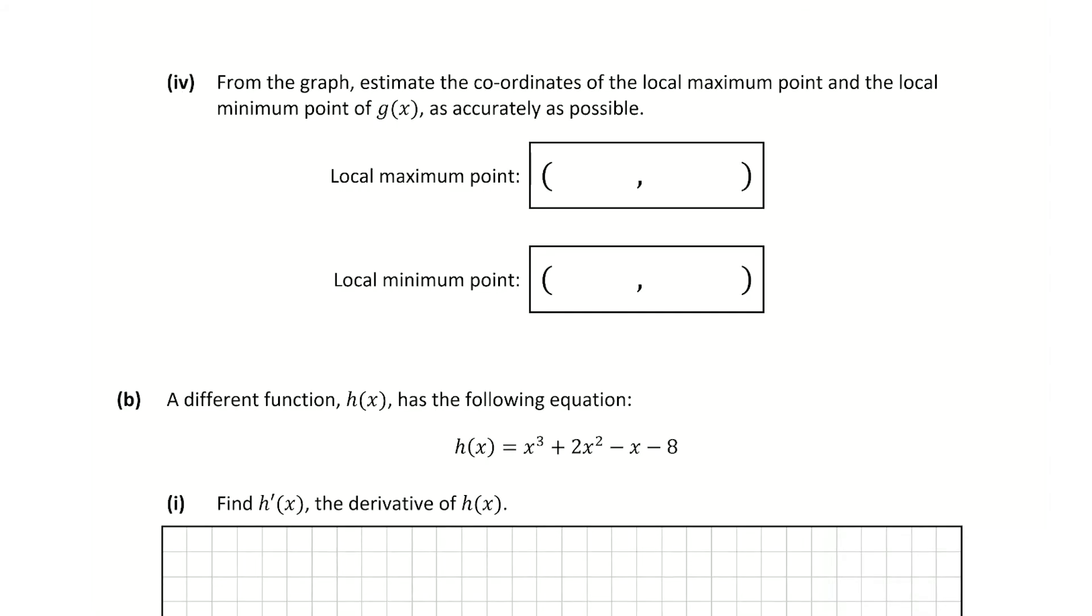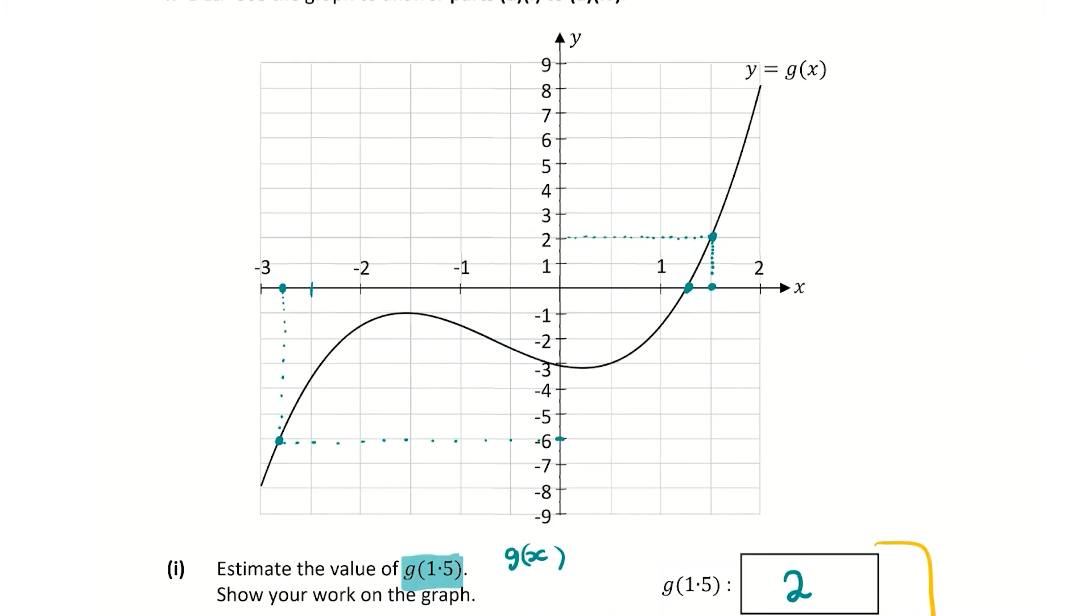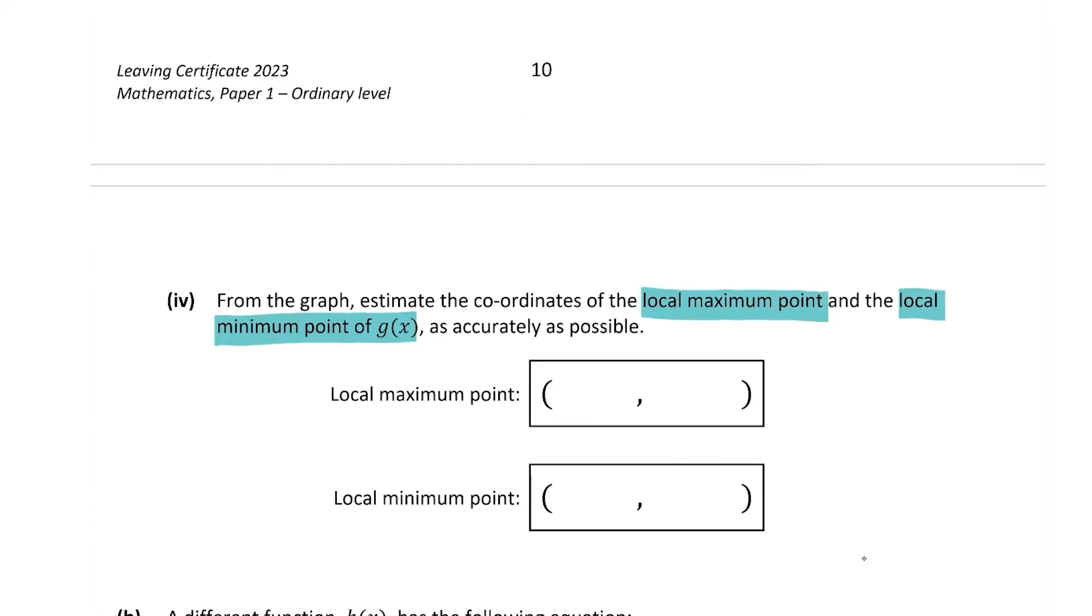Now in question A part 4, we're asked to estimate the coordinates of the local maximum point and the local minimum point of g(x). The local maximum point in this domain is basically the highest curved point, and the same for the local minimum, the lowest curved point. So the highest curved point is going to be here, the top of that probably here. The x value is -1.6 and then it is -1. So the maximum value is (-1.6, -1).